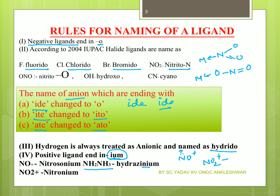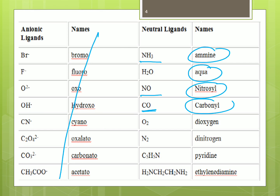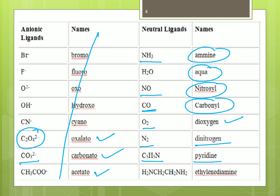For negatively charged ligands, add 'O' at the end. For positively charged or neutral ligands, the names are: H2O → aqua; NH3 → amine; NO → nitrosyl; CO → carbonyl; O2 → dioxygen; N2 → dinitrogen; C2O4²⁻ → oxalato; CO3²⁻ → carbonato; acetate → acetato; C5H5N → pyridine. These are the names of common ligands.